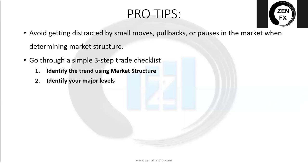Number two: identify your major levels. We will go over this in webinar number two, where we're going to talk about major levels — not just small little levels of support and resistance, but ones that are respected historically over and over again on higher timeframes. Because the higher the timeframe, the stronger the level. When we work with very strong levels, we have a much higher chance of catching a successful entry. Once we know we're in an uptrend, we need to know where the major level of support and resistance are — both below and above where price currently is — so we know where to put our stop loss, take profit, or look for an entry.